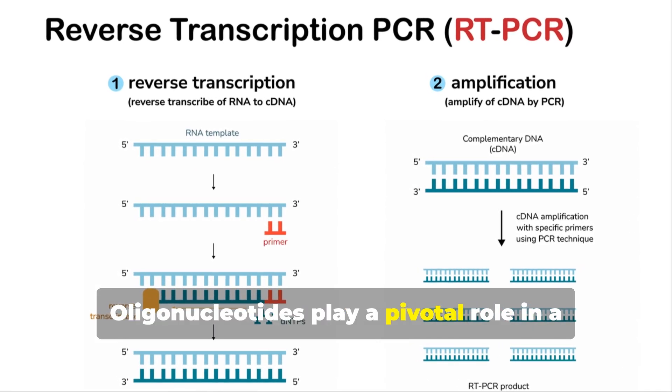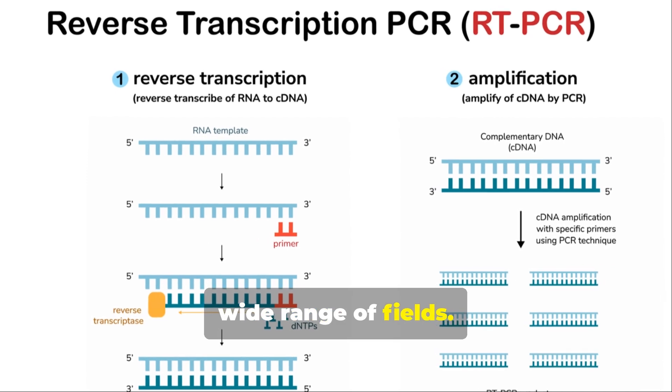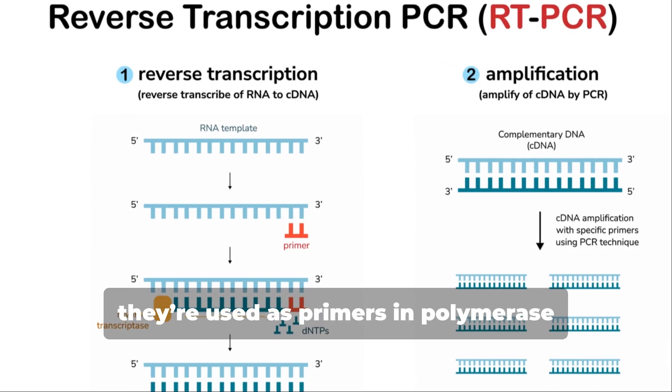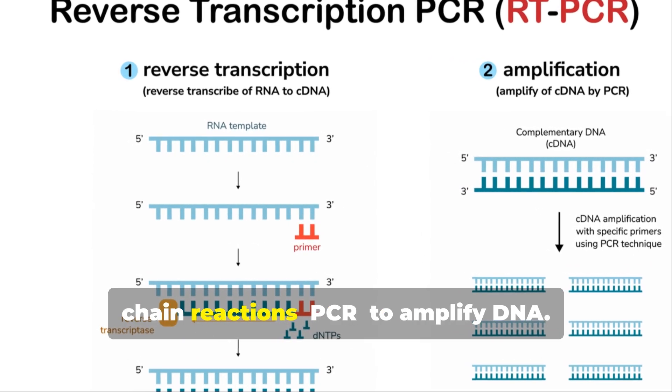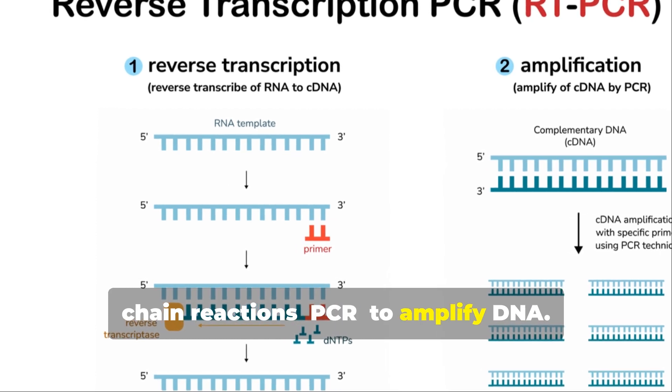Oligonucleotides play a pivotal role in a wide range of fields. In genetic research, they're used as primers in polymerase chain reactions, PCR, to amplify DNA.